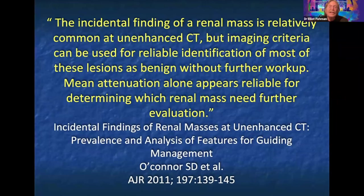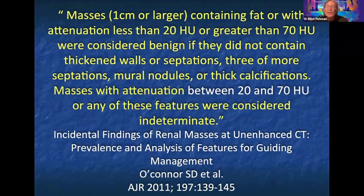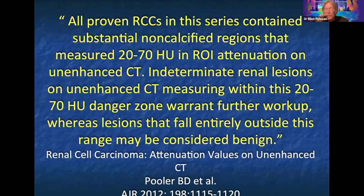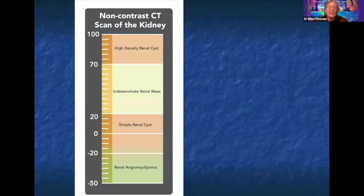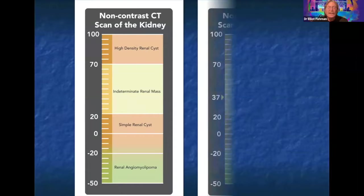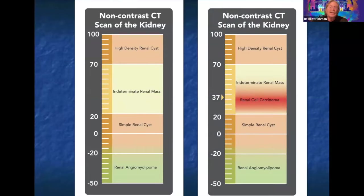The rule: above 70 Hounsfield units on non-contrast, well-defined — 99.9 percent benign. Lesions under 20 Hounsfield units or containing fat on non-contrast are also benign. In the ER, a renal lesion measuring less than 20 or over 70 HU is benign and does not need follow-up. The average density of renal cell carcinoma on non-contrast CT is 35–38 Hounsfield units, so a lesion measuring around 38 HU warrants concern.